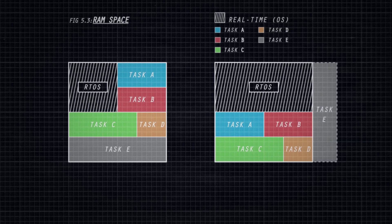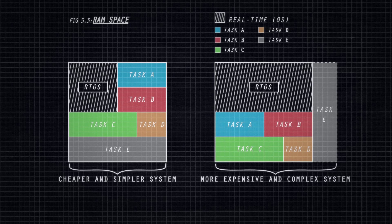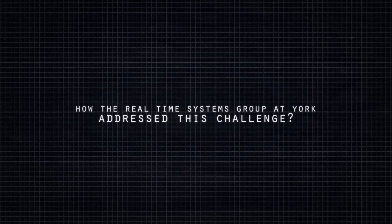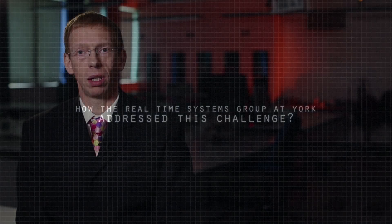Minimizing the memory footprint allows microprocessor variants to be used that have less memory and a lower overall cost. This small difference in unit cost, multiplied by millions of units in a production run, can lead to substantial savings for the automotive manufacturer.